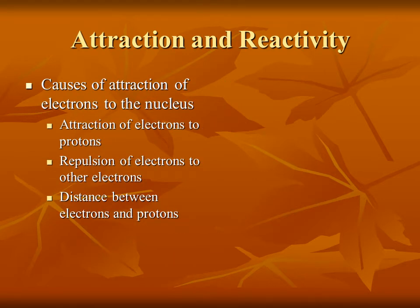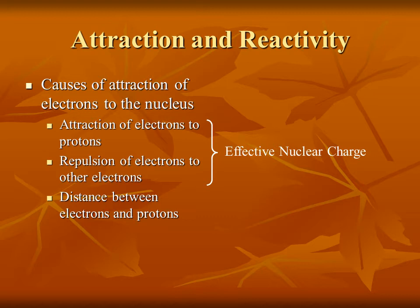So this attraction seems to be really important. Let's look at the three fundamental causes of attraction between the electron and the nucleus. First, there's the attraction of the electrons to the protons. Second, there is repulsion of electrons to other electrons — put two negative charges together, they repel each other. These two quantities can be combined into a single concept called effective nuclear charge, which takes into account both the attraction of electrons to the protons and the repulsion from each other.